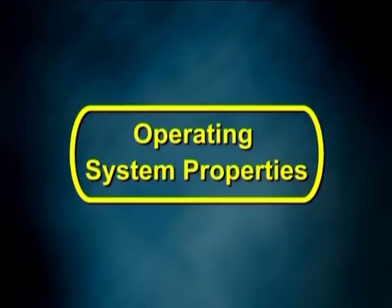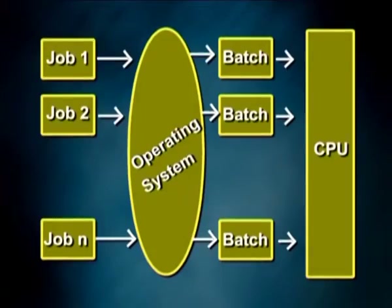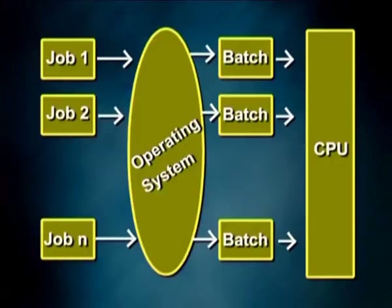Next is Operating System Properties. Number 1 – Batch Processing. Batch processing is a technique in which the operating system collects programs and data together in a batch before processing starts. The operating system defines a job which has a predefined sequence of commands, programs, and data as a single unit. The operating system keeps a number of jobs in memory and executes them without any mutual information. The jobs are processed in the order of submission, i.e., first come first served fashion. When a job completes its execution, its memory is released and the output gets copied into an output pool for later printing or processing.